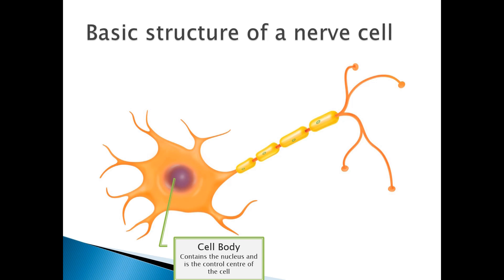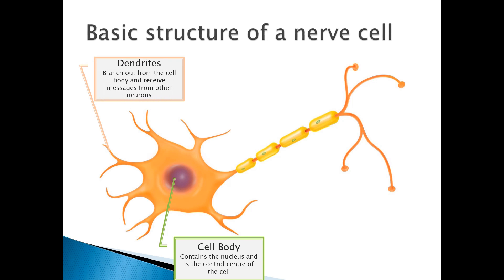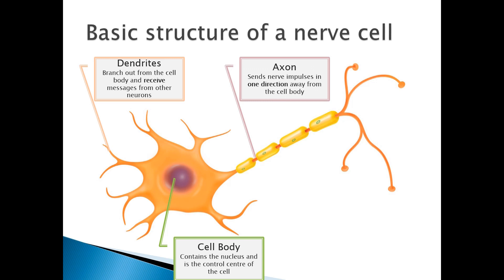These finger-like projections extending out from the cell body are called dendrites, and these receive messages from other neurons. The main arm that extends out from the cell body is called the axon, and that sends nerve impulses in one direction away from the cell body.